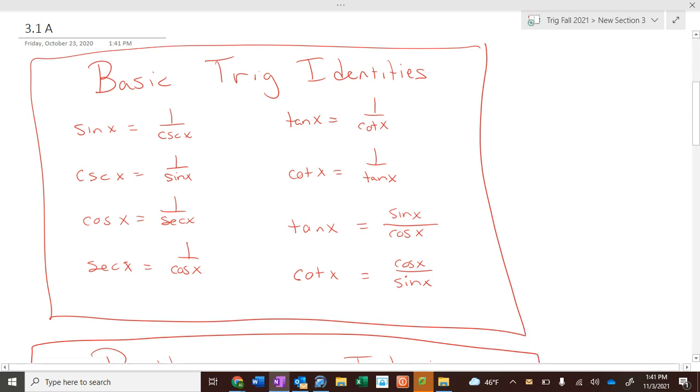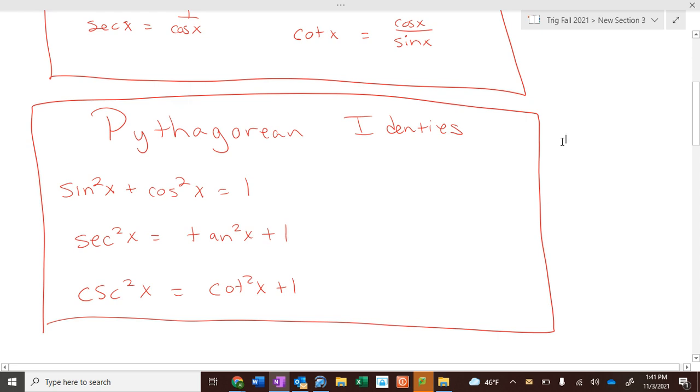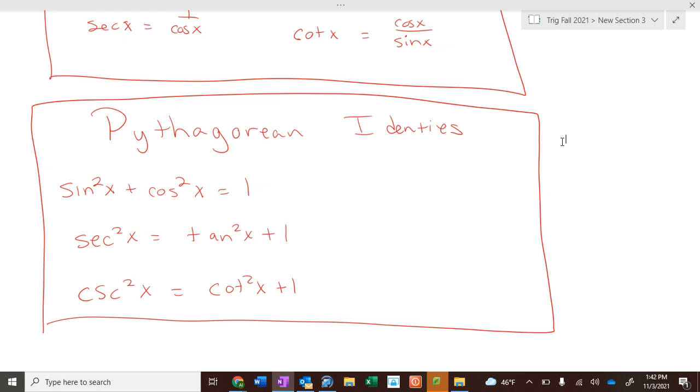Those are the basic trig identities. Now we have the Pythagorean identities. We have three Pythagorean identities. And then, like the top one, we could write three different ways. The middle one, we can write three different ways. And the bottom one, we can write three different ways.